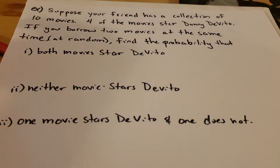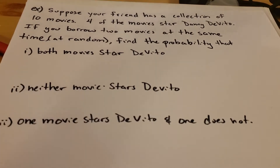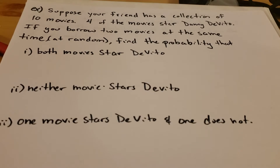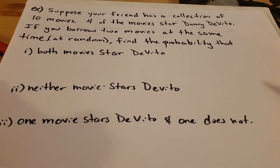We're being told there is a collection of 10 movies. Four of the movies star Danny DeVito. We're going to be borrowing two of the movies at the same time randomly, and we want to find the probability of a couple different things happening. The first one is that both movies star Danny DeVito. First we need to figure out: are these independent events or are these dependent events?